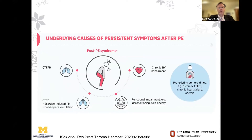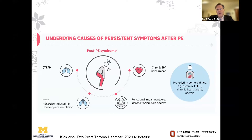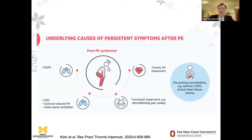There are many wonderful articles from Klock on post-PE syndrome. When we talk about limitations after PE, we are slowly incorporating them all under the umbrella of post-PE syndrome — including CTEPH and CTED. But contributors to functional and lifestyle limitations also include deconditioning, pain, anxiety, chronic RV impairment, and most importantly, those pre-existing comorbidities the patients bring into this syndrome. To what extent are those pre-existing comorbidities contributing to their limitations after PE?